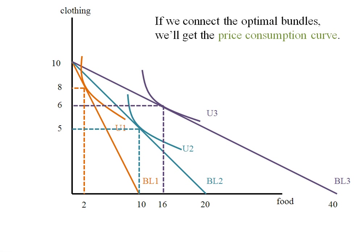If we connect the optimal bundles we get something called the price consumption curve. I'm placing a green dot on each of my optimal bundles, and connecting those dots gives us the price consumption curve.